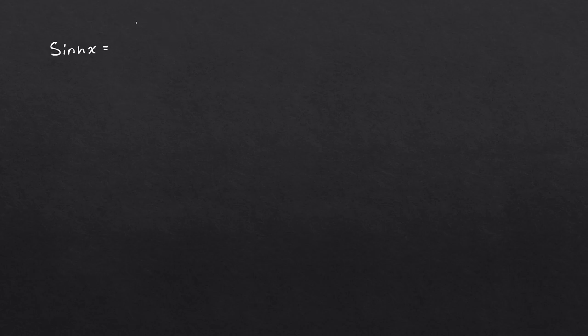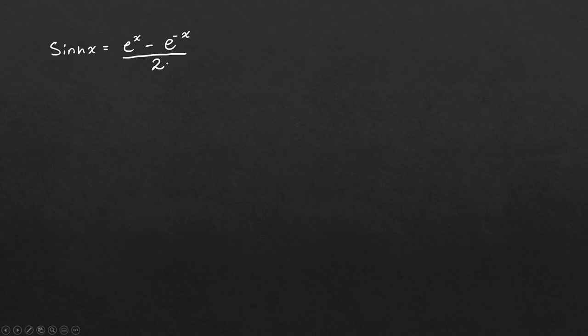The only thing you need to know is the exponential definition for sinh x and cosh x. If you know the exponential definitions, it's really, really easy — it's just basic differentiation. So let's start by writing the exponential definitions. For sinh x — hyperbolic sine — this is e to the x minus e to the minus x, all over 2.